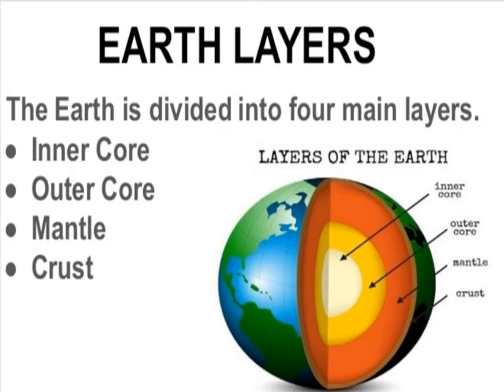Today my topic is about Earth layers — we'll learn about the layers of Earth. The Earth is divided into four main layers. As seen in this diagram, the first is the crust, the second is the mantle, the yellow region is the outer core, and the white region is the inner core. These are the four main layers of the Earth.